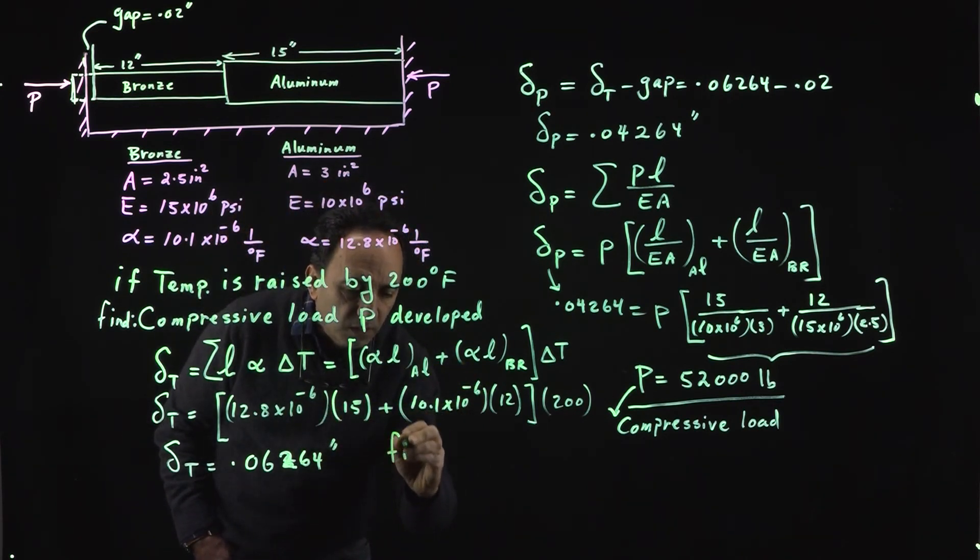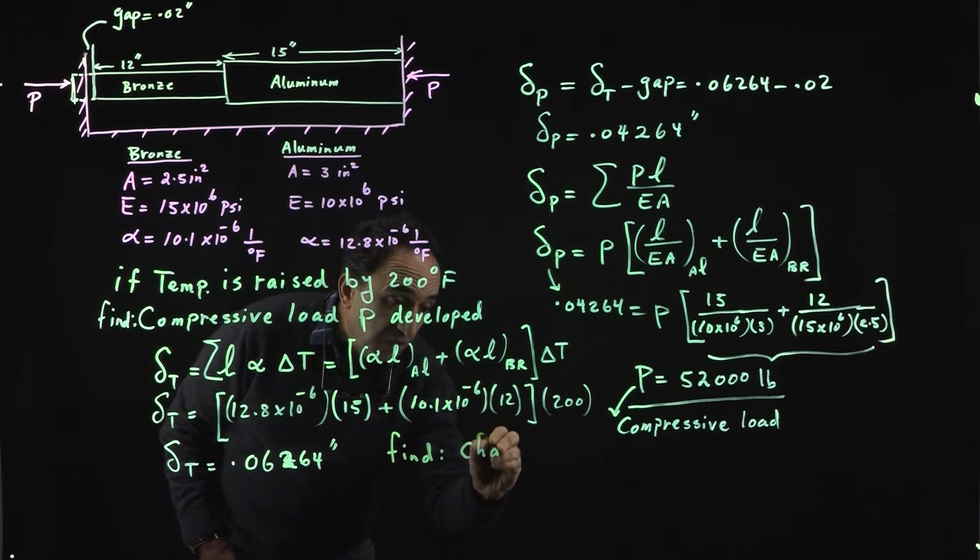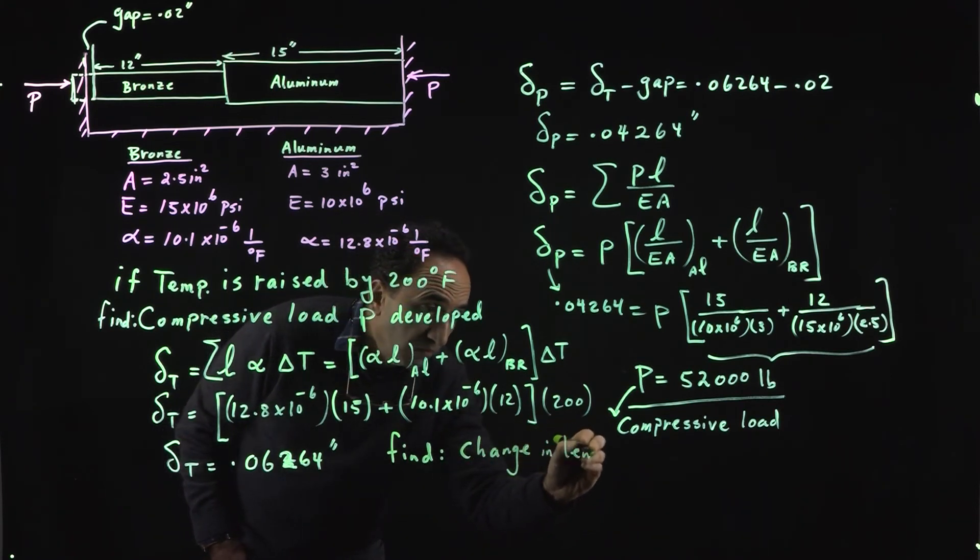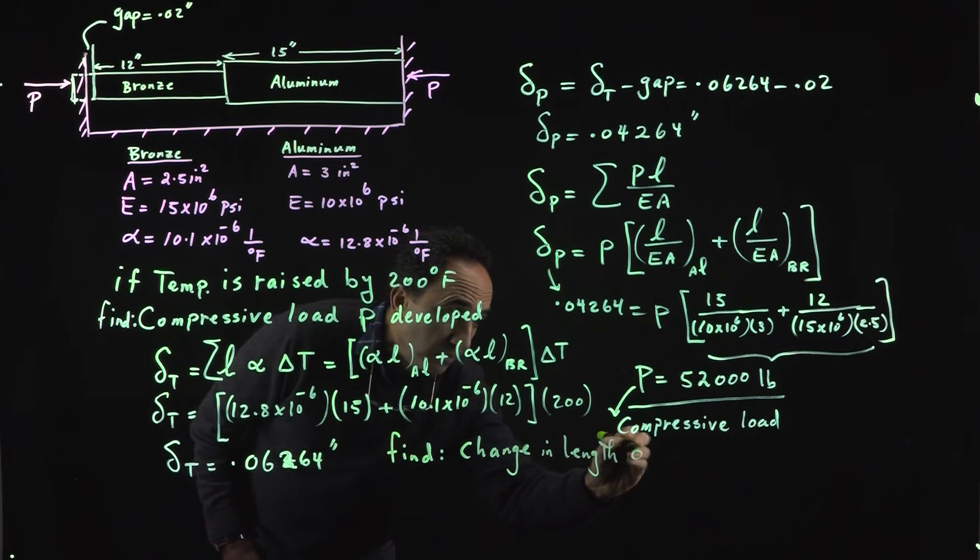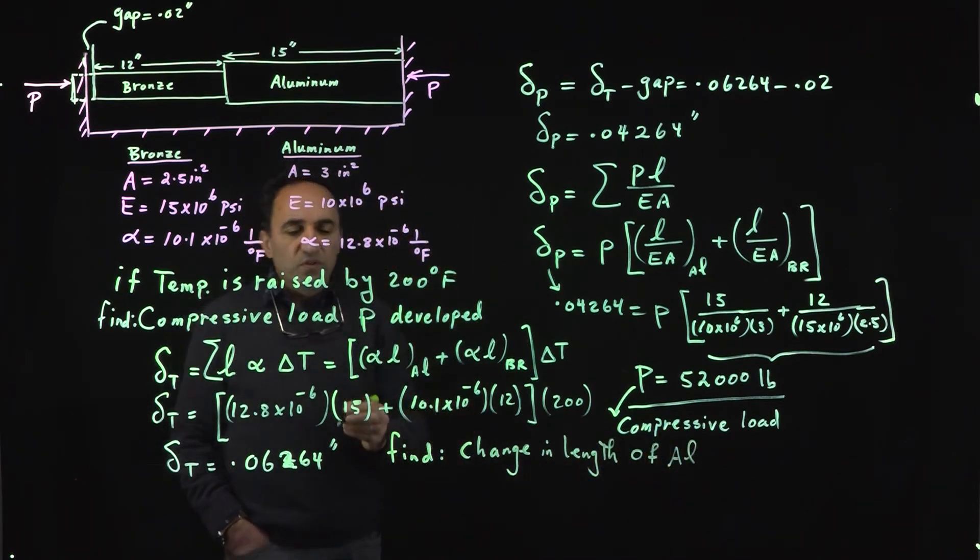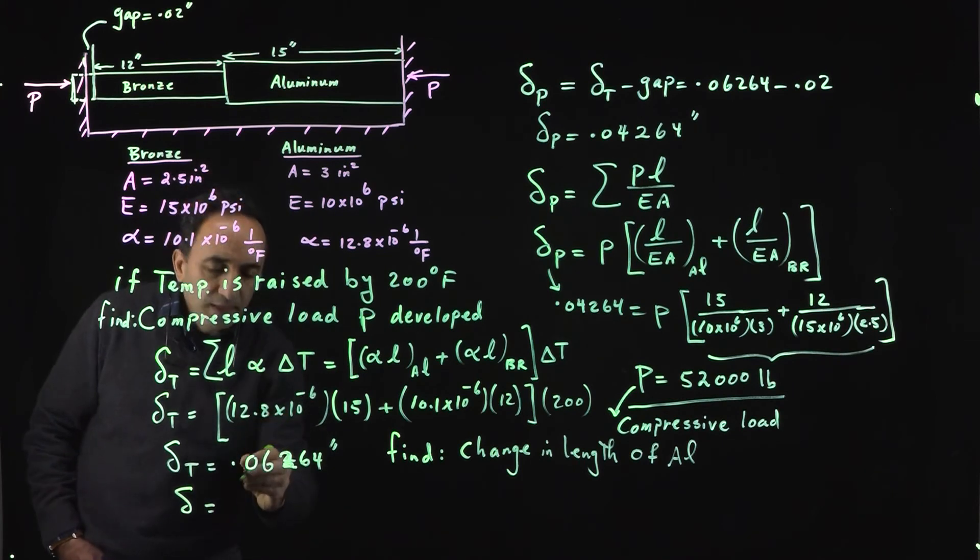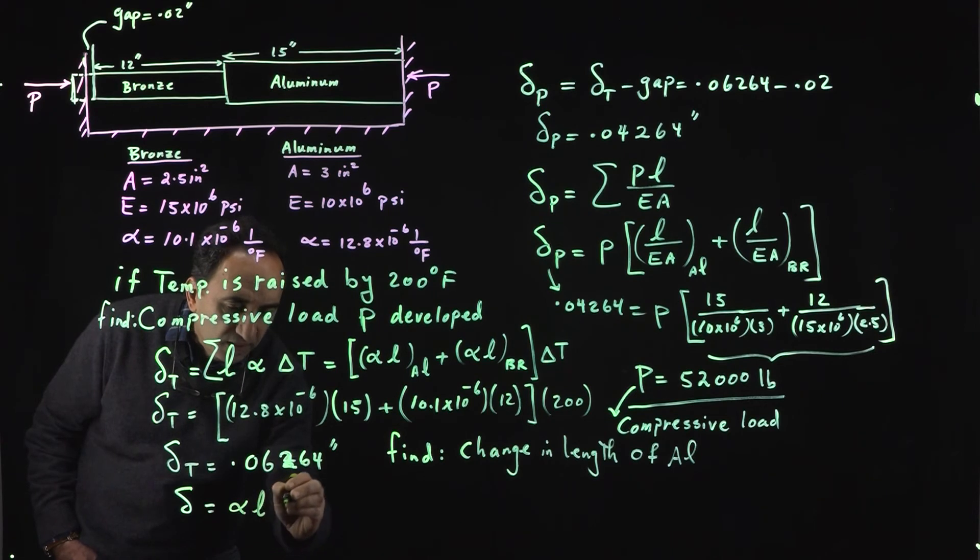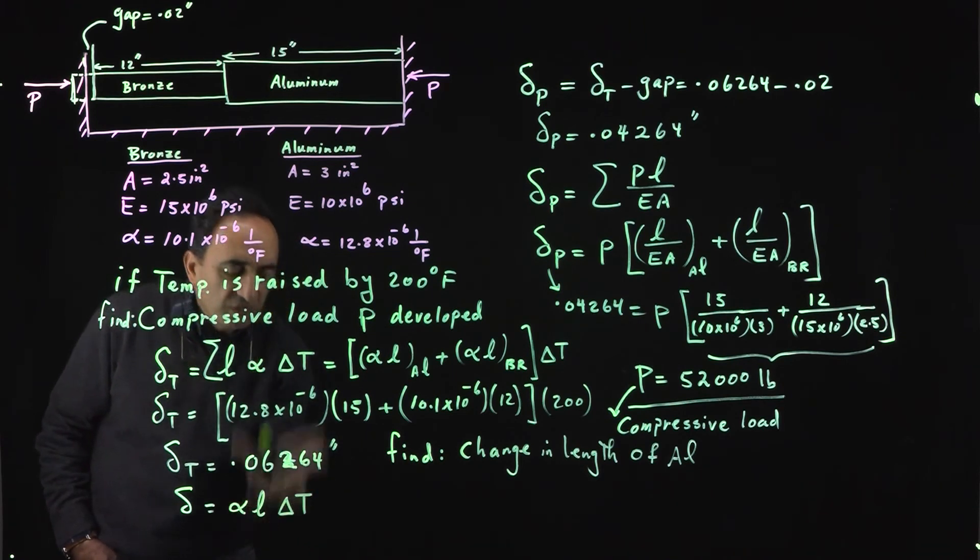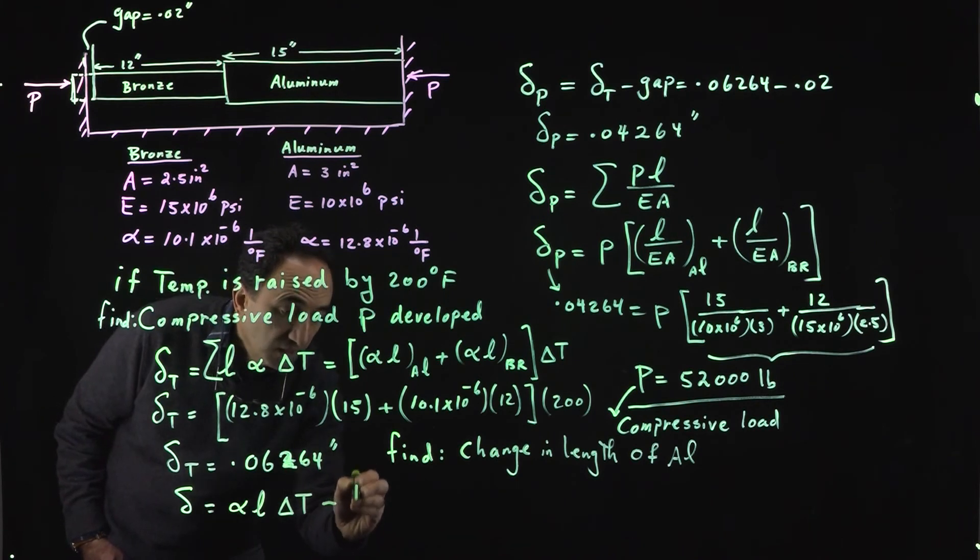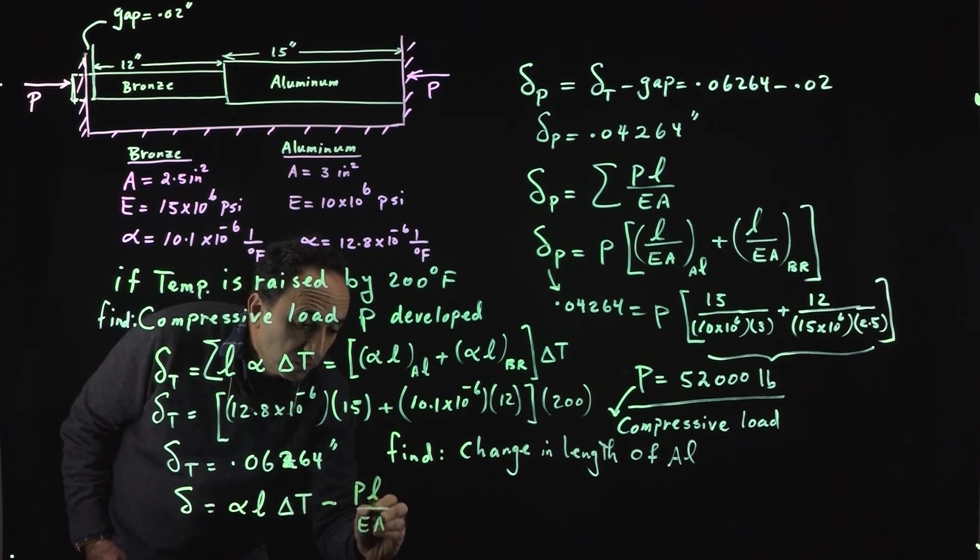Let's find the change in length of aluminum. This is the way we do this. You want to find the overall change in length for aluminum. Due to temperature rise we have expansion of alpha L times delta T, or L alpha delta T. Temperature is going to cause this guy to have thermal deformation, then the compressive load kicks in so we have minus PL over EA.